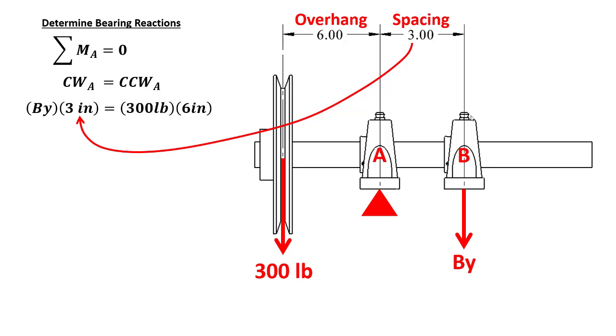Since the overhang is twice as large as the bearing spacing, the reaction load on bearing B will be twice as large as the 300 pound load on the pulley. Can you see now why the overhang distance and the bearing spacing greatly affect the resulting bearing load? The radial load on bearing B is 600 pounds.